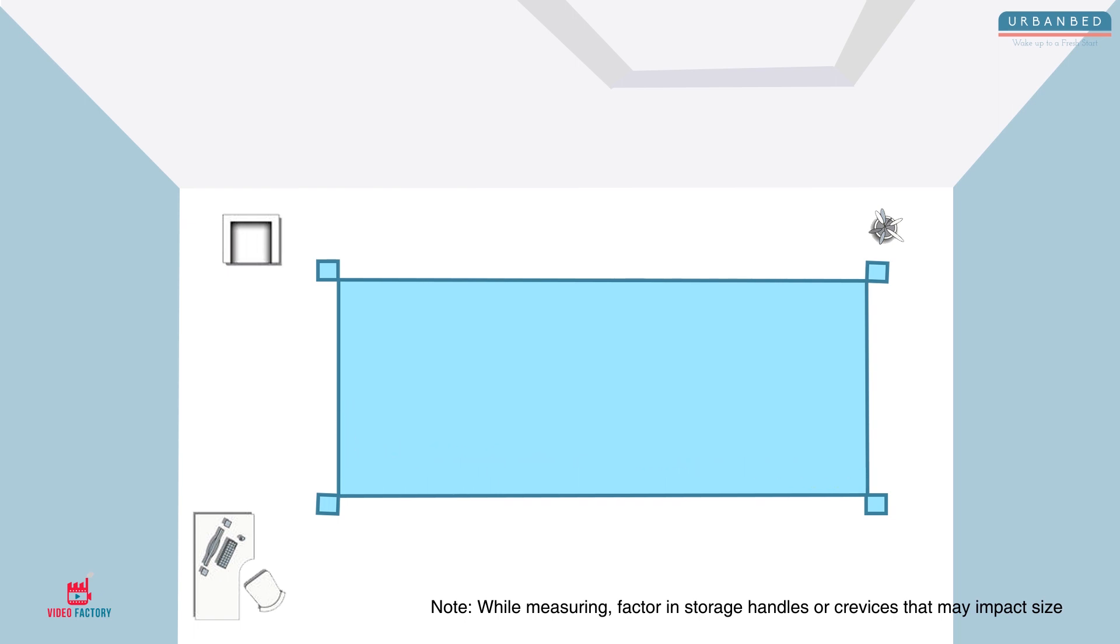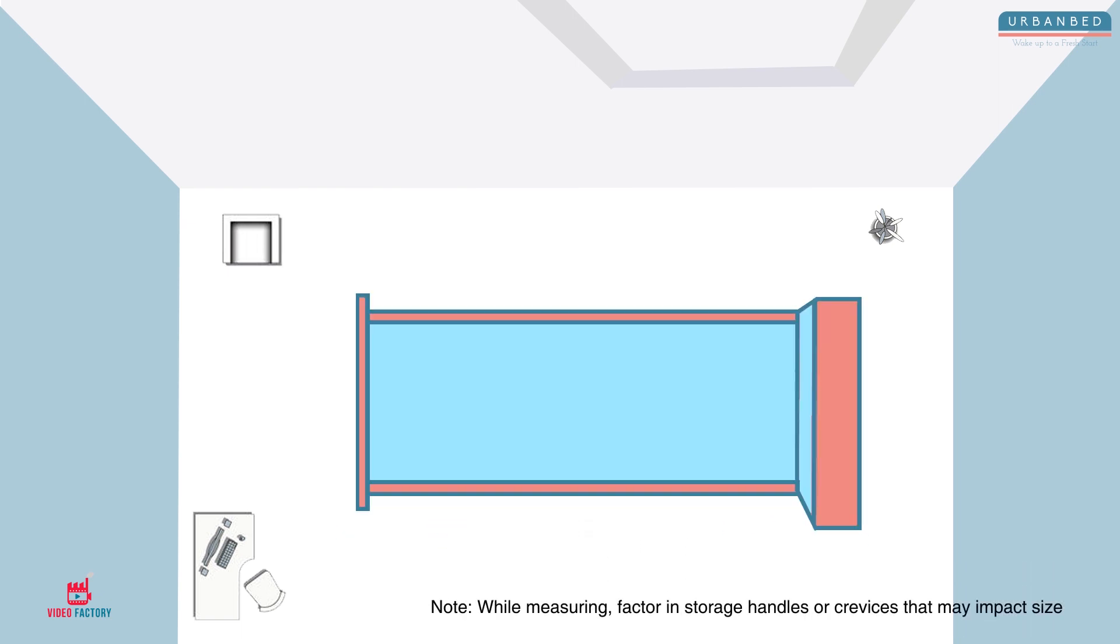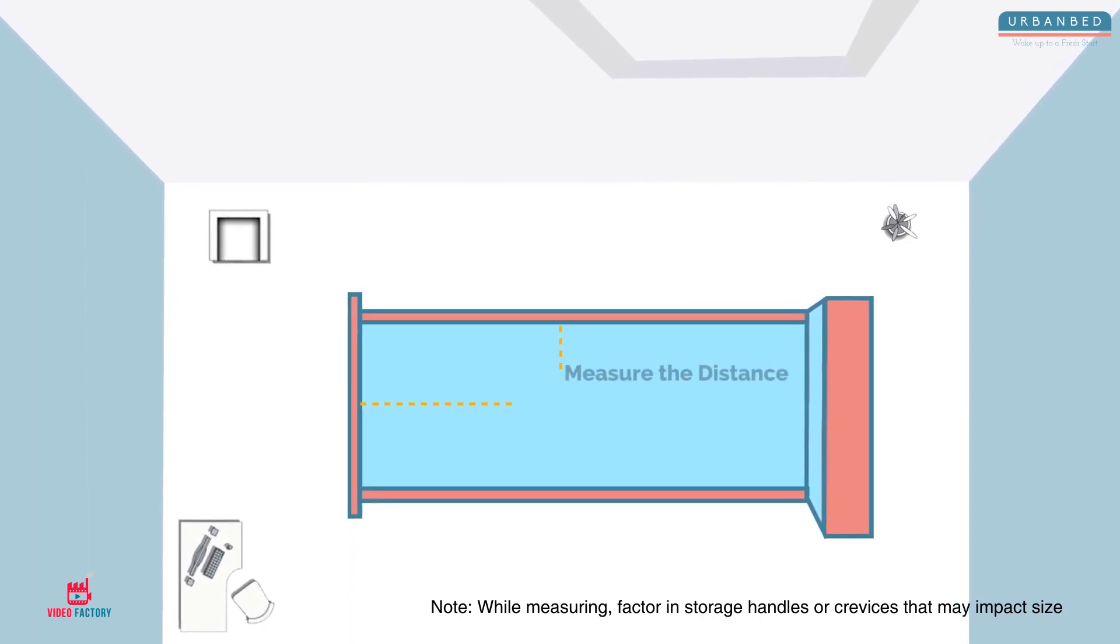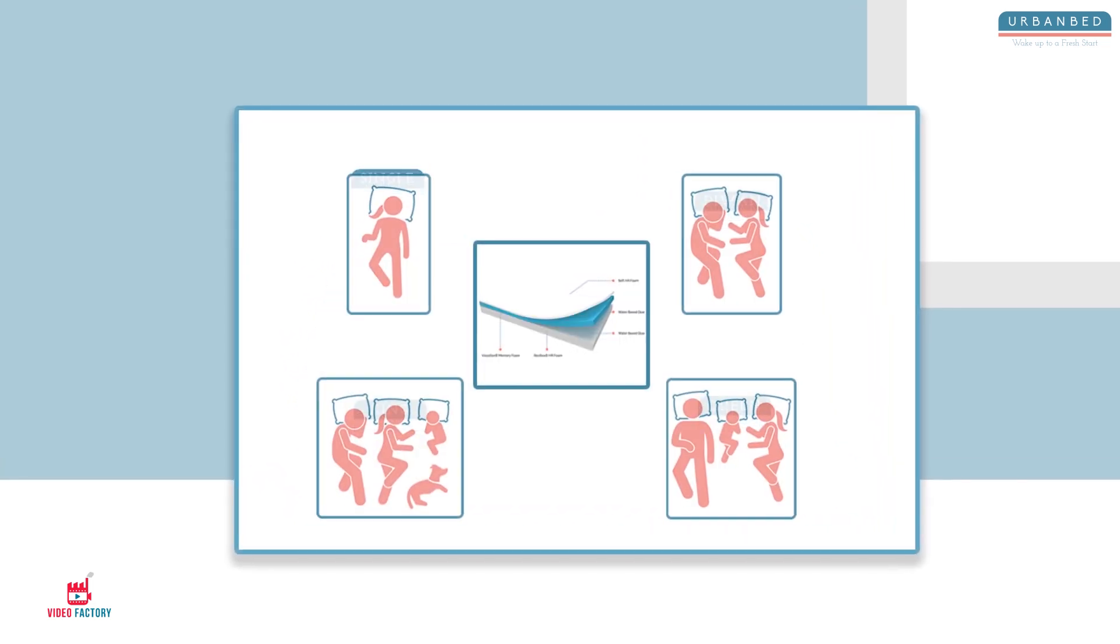Most likely, your bed will have an embedded box because storage and extra storage are important. The box beds come with open sides. All you got to do is measure the distance between them and voila! Right there, you have the perfect size for your mattress.